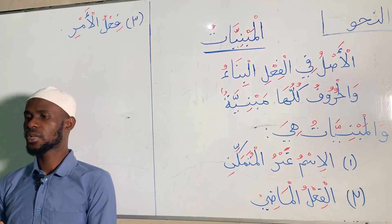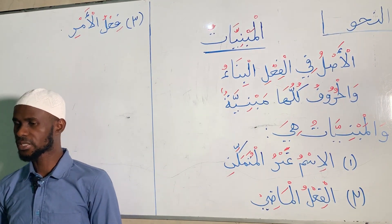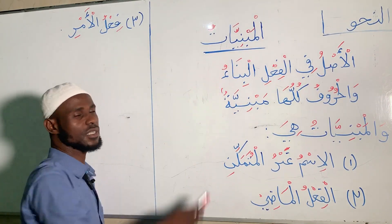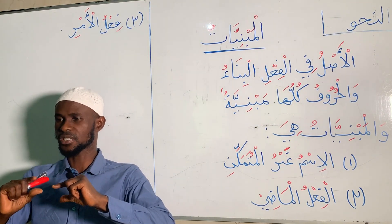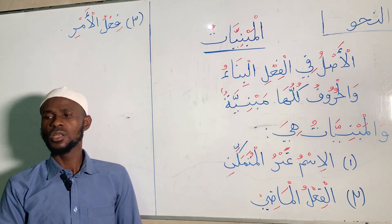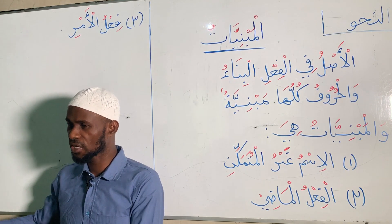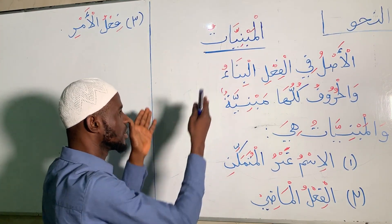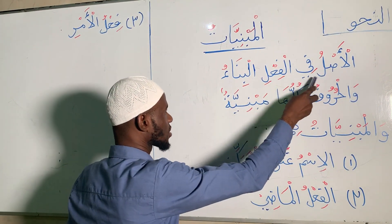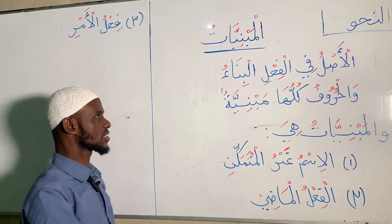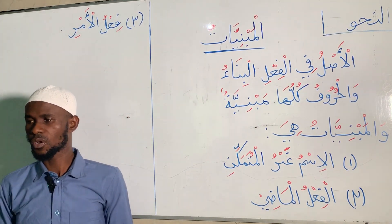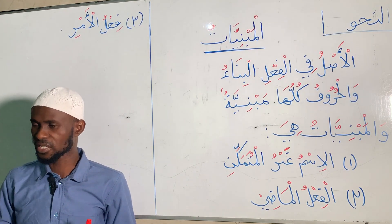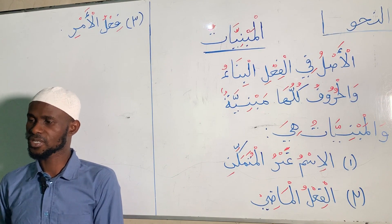Al-Mabniyat is the opposite of Al-Mu'rabat. Al-Mu'rabat means the words that have inflections at the end, while Al-Mabniyat means words that have stagnancy — Al-Bina — in their end. In Al-Mu'rabat we said Al-Aslu fil ismi al-Arab: the basis of a noun in Arabic is inflections, changes. While in Al-Mabniyat, the basis of stagnancy — Al-Aslu fil fi'l — means the basis of a verb in Arabic is Al-Bina; it's always stagnant. The higher percentage of a verb in Arabic is stagnancy, while the lesser percentage is Al-Fa'ilu Al-Mu'rab, having inflection.